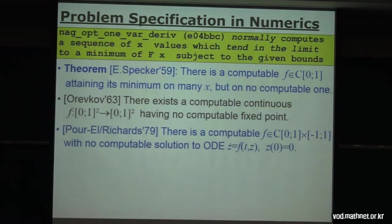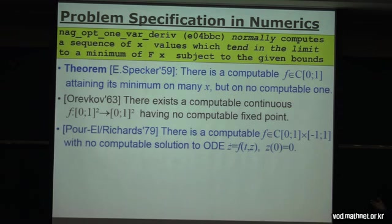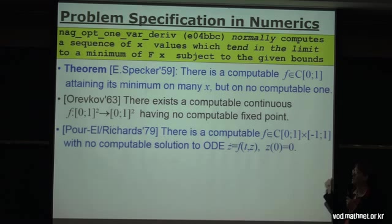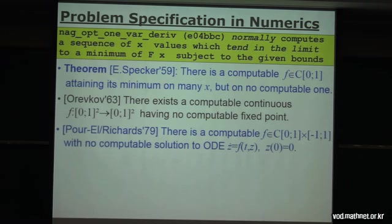A third counterexample is due to Perel and Richards from 1979, who proved the existence of a computable continuous right-hand side to an ordinary differential equation — first order in one variable, zero initial conditions — such that again there are many solutions. Peano's existence theorem guarantees a solution from a continuous right-hand side. Without Lipschitz continuity the solution need not be unique, and there are many solutions, but provably none of them is computable. So the least hypothesis we should impose when asking for a computational solution to ODEs is Lipschitz continuity.